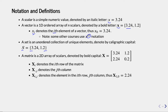A bold capital letter X means it's a matrix, which is a two-dimensional array of scalars. X sub i means the i-th row of the matrix. X colon j denotes the j-th column, and X sub ij denotes the element in the i-th row and j-th column. So X 1 0 means row 1 and column 0 — that value here.